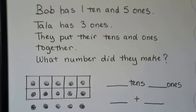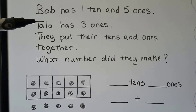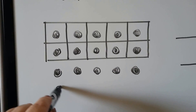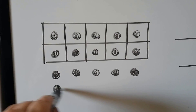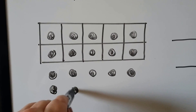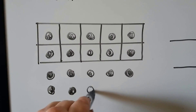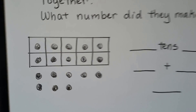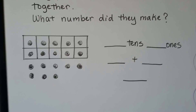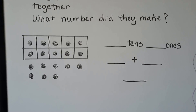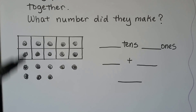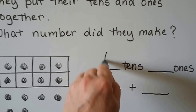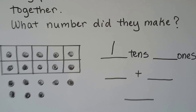And Tala has 3 ones, so we need to add hers: 1, 2, 3. So what number did they make? There's 1 ten.